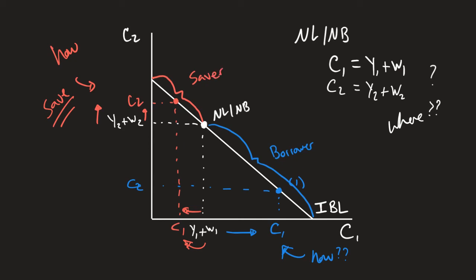So this is very interesting to figure out how we're going to be representing different people in our consumption model, whether it be borrowers or savers. It's all dependent on this no lending, no borrowing point. A person who's right here at the no lending, no borrowing point, they are not borrowing, and they're not saving their money.